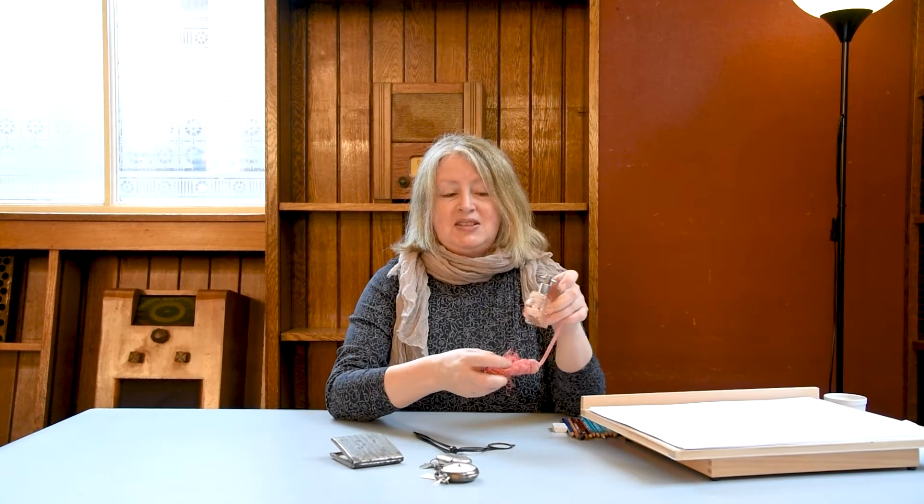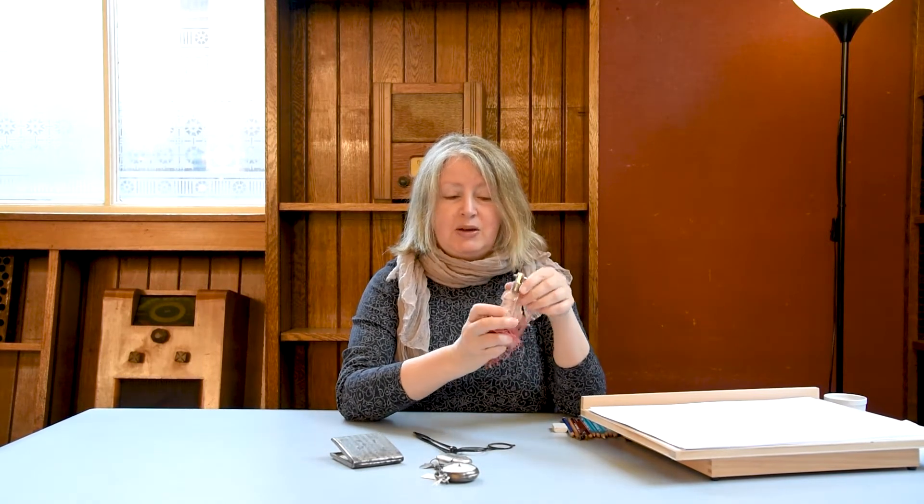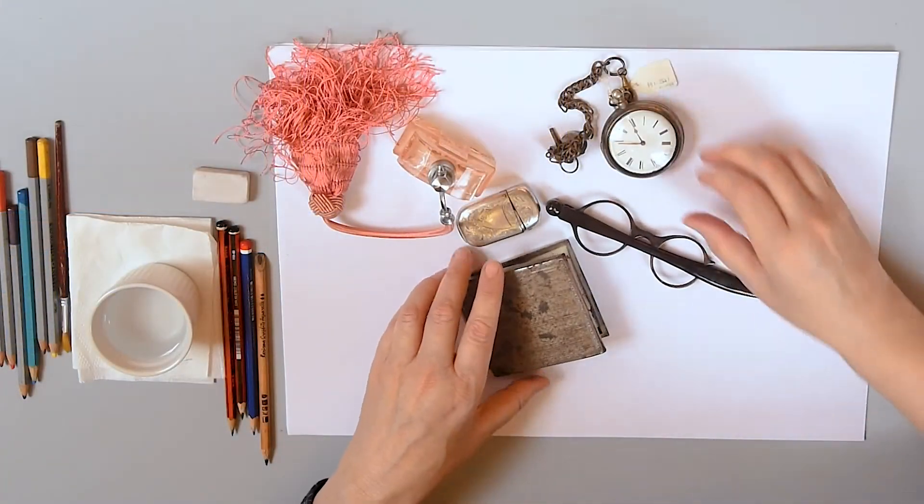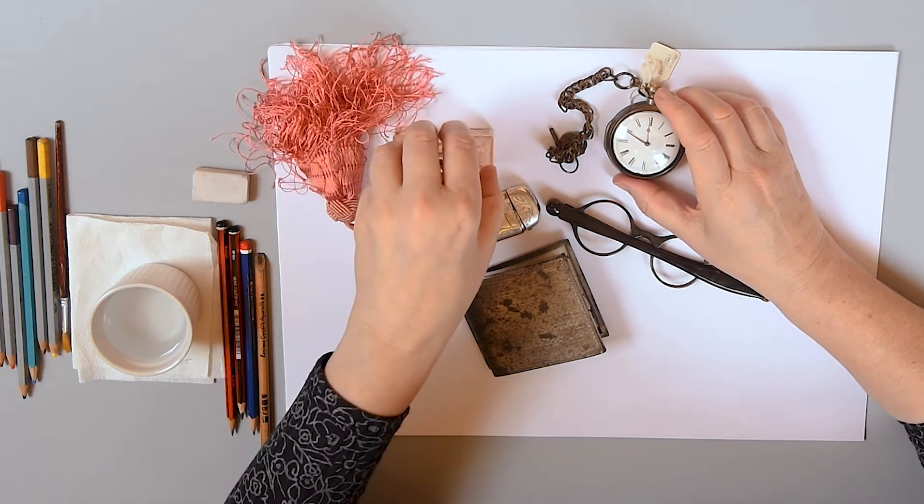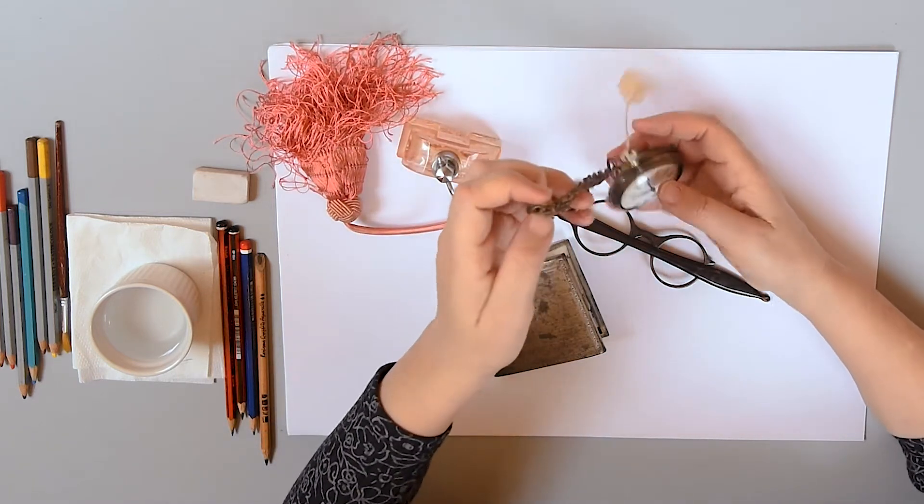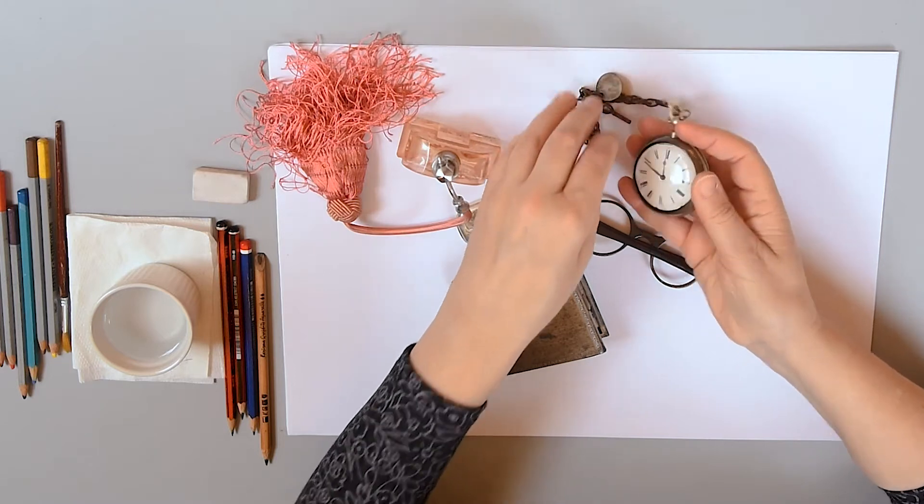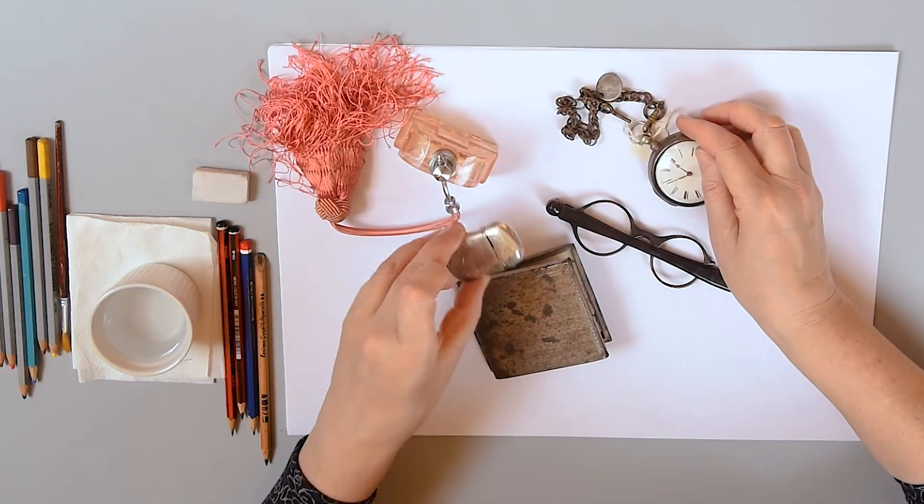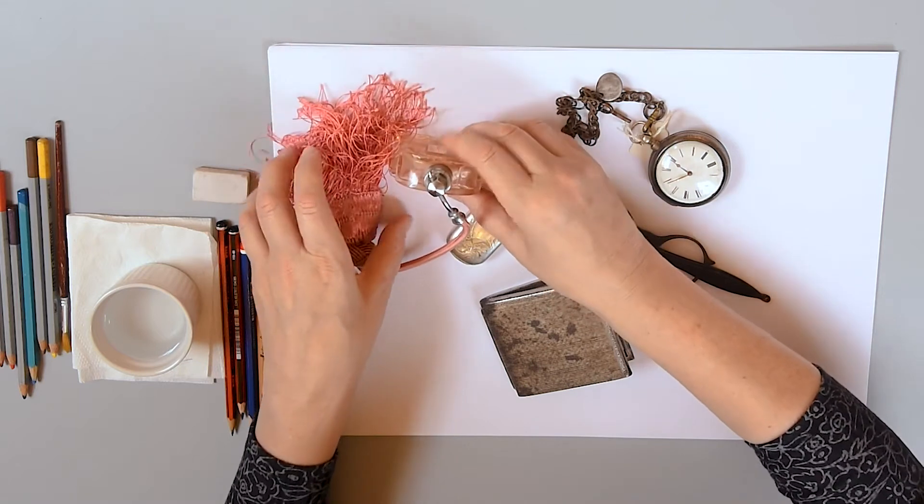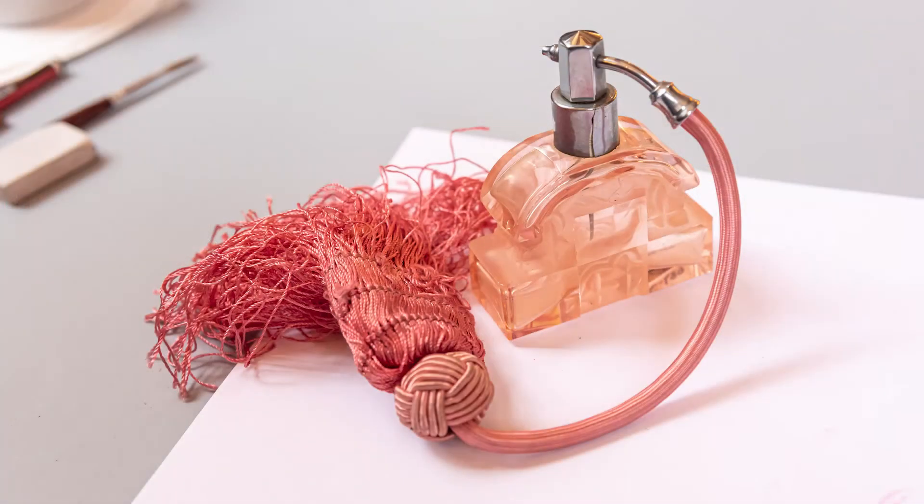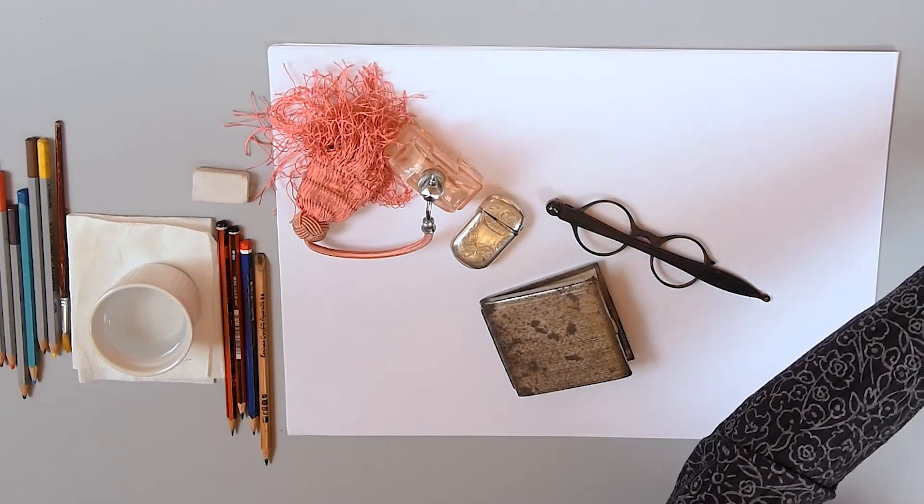I have some personal possessions here from the museum collection that we're going to explore. Some would have been carried by people all day long, like a fob watch or a lighter. But I'm going to pick this one here, this perfume spray, because it has a mixture of different textures and a lovely colour that I want to try and capture with the watercolour pencils we're going to use.